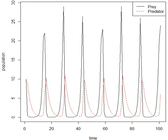In the model system, the predators thrive when there are plentiful prey but ultimately outstrip their food supply and decline. As the predator population is low, the prey population will increase again. These dynamics continue in a cycle of growth and decline.